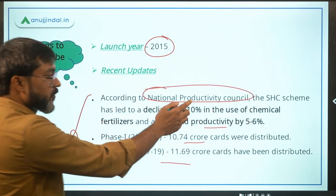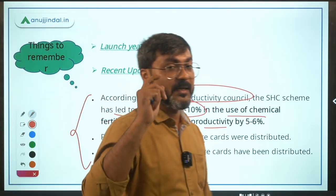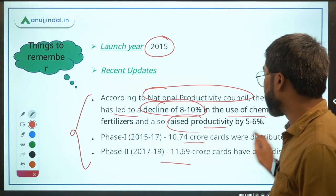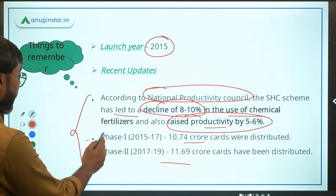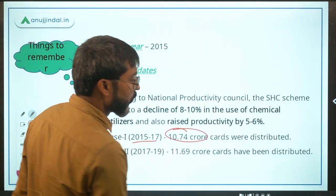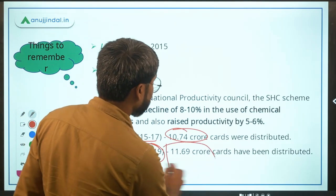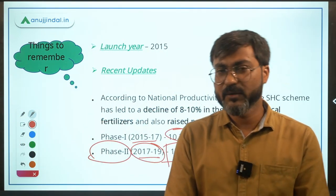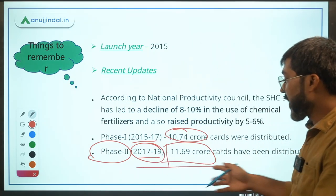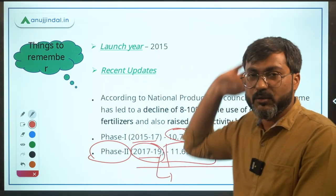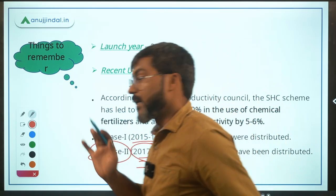According to the National Productivity Council, the Soil Health Card scheme has led to a decline of 8–10% in the usage of chemical fertilizers, and has raised productivity by 5–6%. In Phase 1 (2015–17), 10.74 crore cards were distributed, and in Phase 2 (2017–19), 11.69 crore cards were distributed. Data beyond 2019 is not yet updated on the official website.